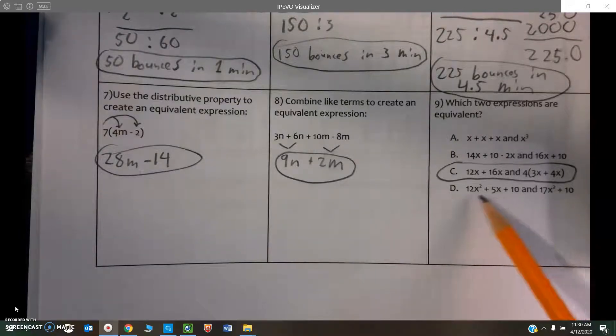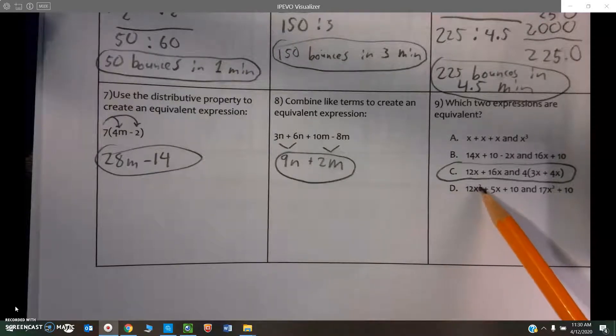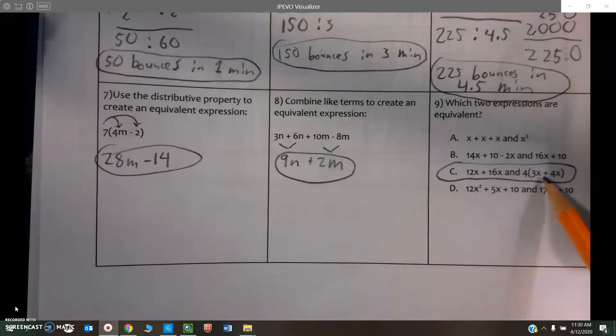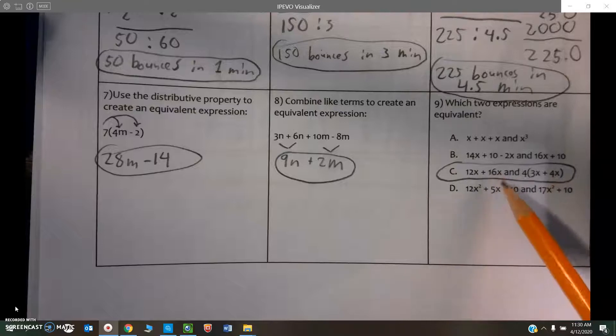And this one here, we actually could not combine these to get 17x², because this one has an exponent and this one doesn't. So you actually cannot combine these two. This was the only one that was correct, and you were able to use factoring. So this person pulled out a 4, and if you distributed that back in, you'd get this.